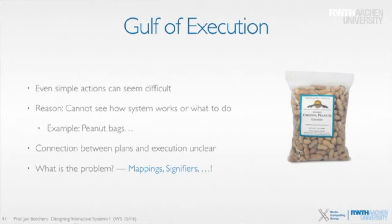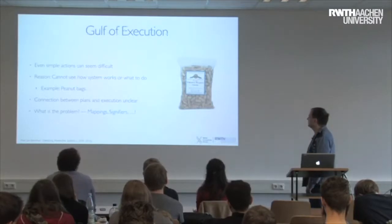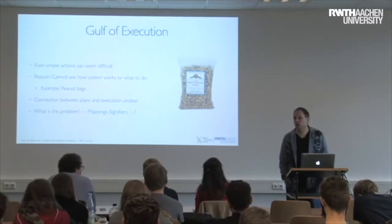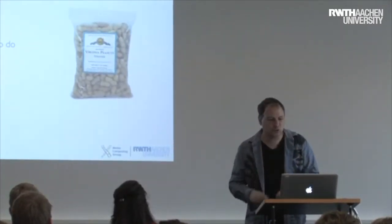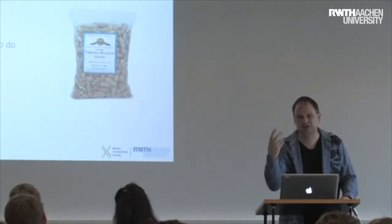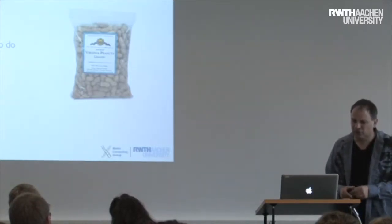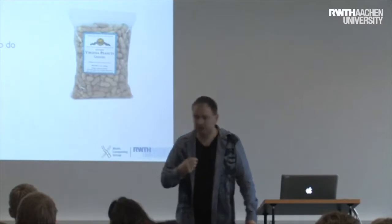Let me give you an example. I like peanuts, and even a simple action can be hard. The other day I got a bag of peanuts and my goal was: I'm hungry. The plan was to open this bag of peanuts — quite clear still. But then I needed to formulate an action sequence. I was looking at the bag of peanuts; it was completely sealed and not indicating how to open it. There was no handle or part where you could rip or open it. So the connection between my plan and how I executed was unclear — I was missing the mappings and the signifiers.